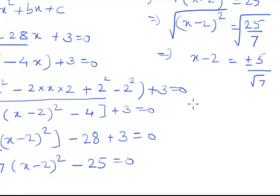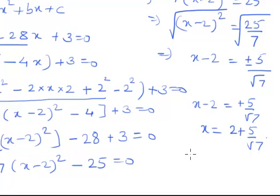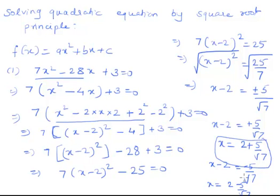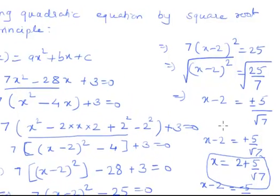Now I have two values. x - 2 = +5/√7, which gives x = 2 + 5/√7. And the second value is x - 2 = -5/√7, giving x = 2 - 5/√7. These two values are the required values of x, or they are the zeros of the given quadratic equation. This is how we solve a quadratic equation using the square root principle.